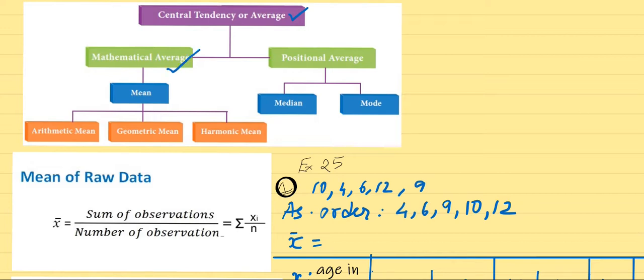Now, there are two types of things. One is mathematical average which you calculate by arithmetic operations, we call it arithmetic. Then there is geometric mean and harmonic mean. You will learn those later on. Right now our topic is arithmetic mean. Second, you can also find it based on position, the median and the mode which we have already done.